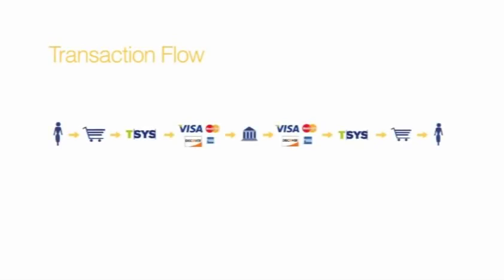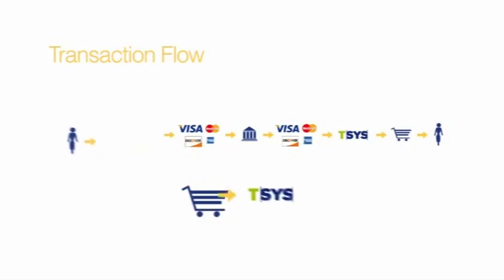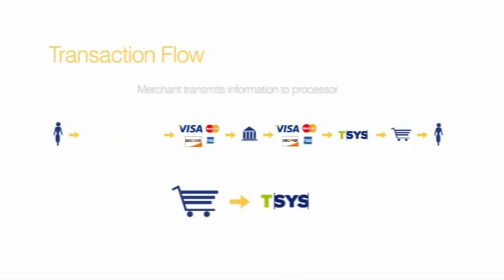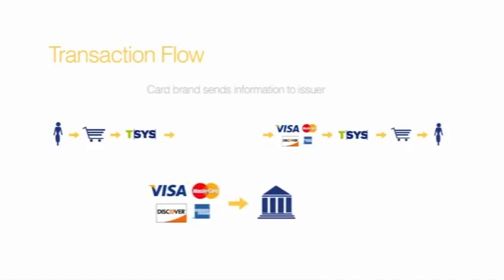As outlined in Part 1, the majority of card transactions follow the same basic pattern. A cardholder presents a card for payment. A business or merchant accepts the card and transmits card and purchase information to a payment processor like TSIS Merchant Solutions. The payment processor routes the card and purchase information to the appropriate card brand, which sends the information to the card issuer.